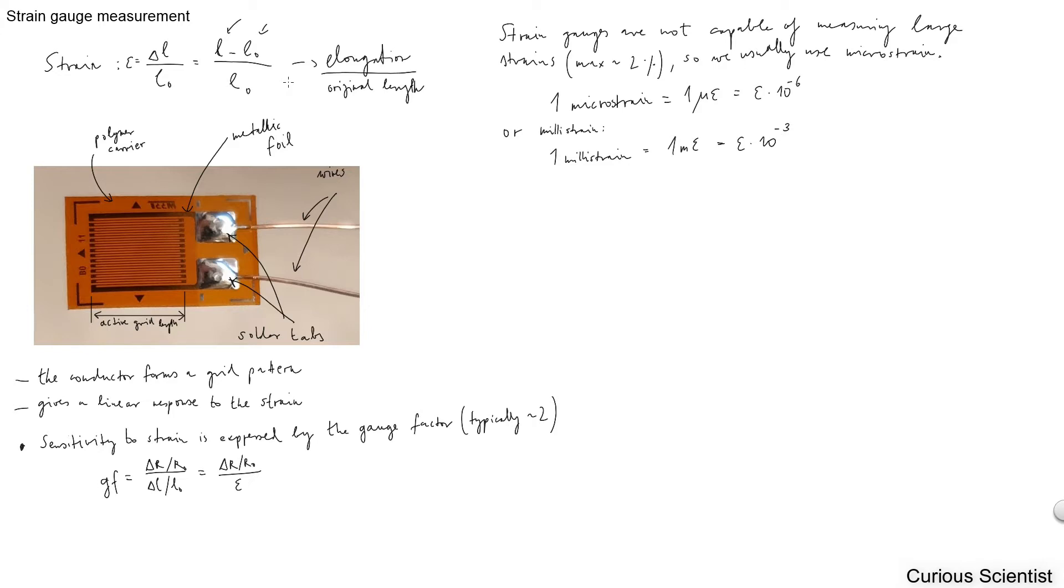If you try to use strain gauges for measuring strain you have to keep in mind that these devices are not capable of measuring large strains. The maximum strain that can be measured by these devices is around two percent. Since we are measuring very small strains it is very convenient to introduce micro strain or milli strain. It is nothing else than just putting these prefixes in front of the strain, so we get some numbers which are easier to treat.